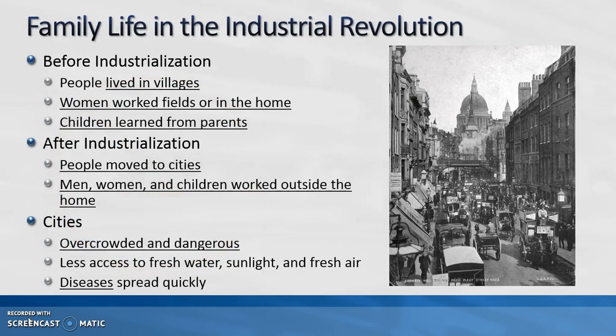Family life was impacted by the industrial revolution. People lived in villages prior to industrialization, where women worked in the fields together with men or inside the home, and children learned trades from their parents. After industrialization, people moved to cities in search of jobs.